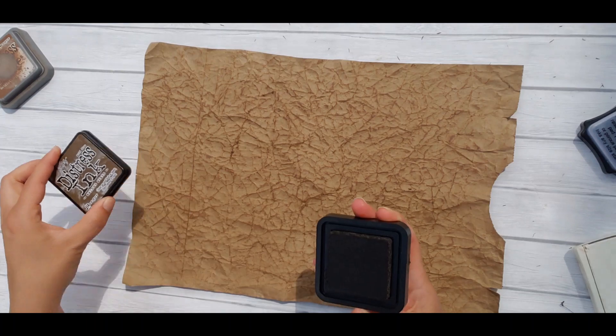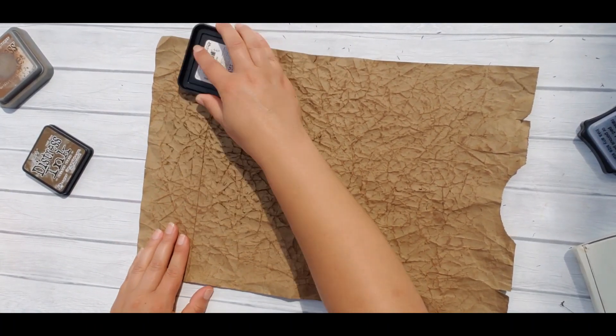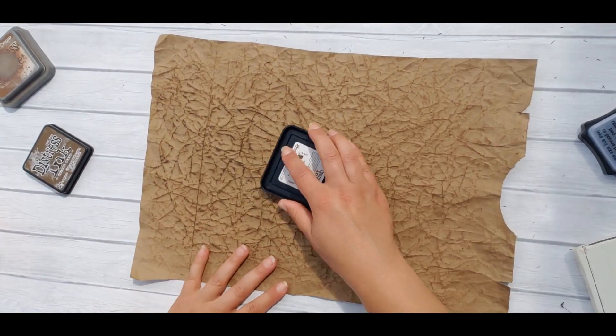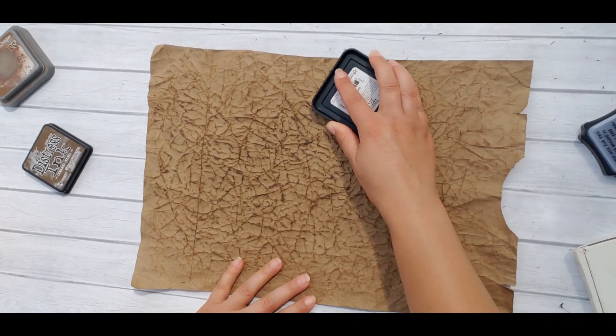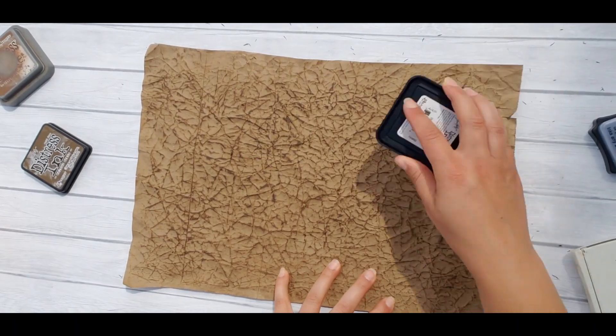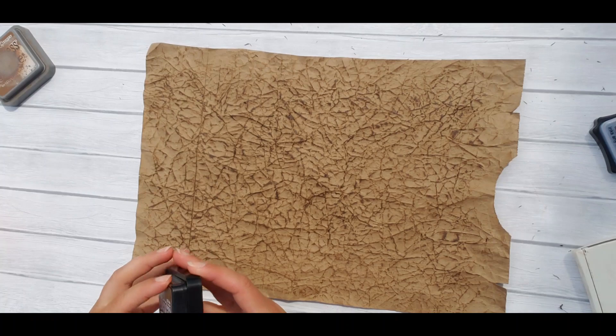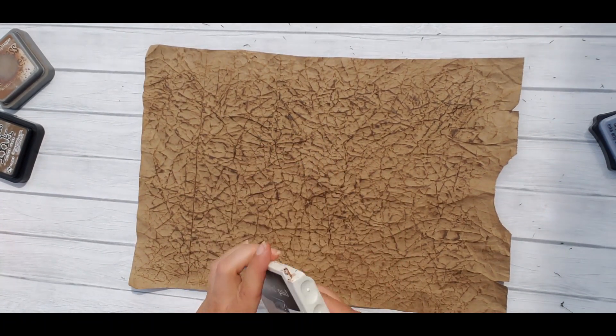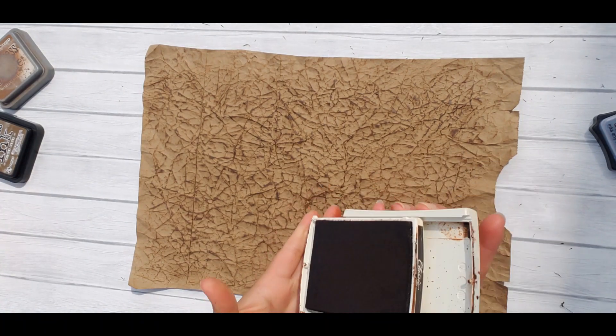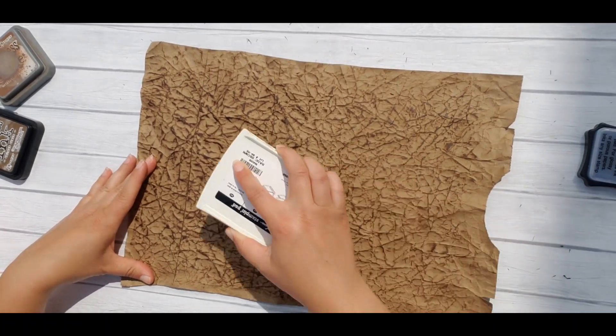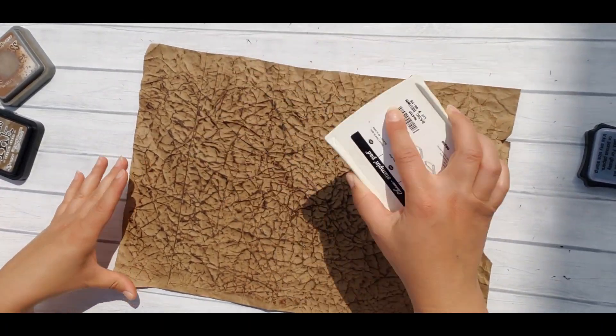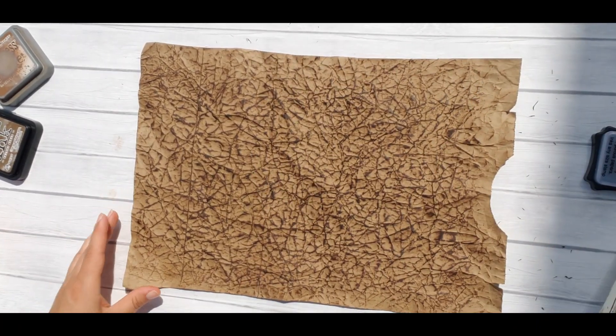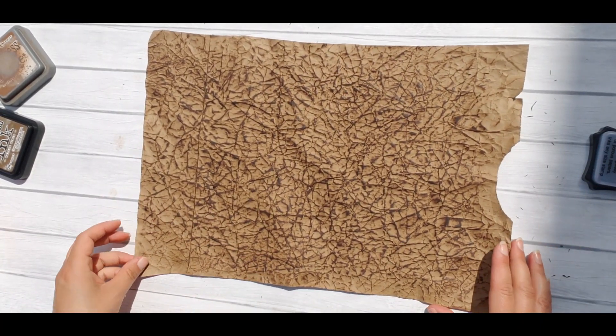I'm going to add a little bit of walnut stain. And I am also going to use some of this basic brown stamping up.